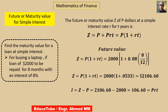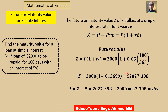The same equation is used again, but this example has a difference — the time is given in days rather than months. I want to show that days must also be converted into years, so it becomes 100 by 365. All other values remain the same. The future or maturity value Z comes to 2027.397, and subtracting the principal gives interest of 27.398.